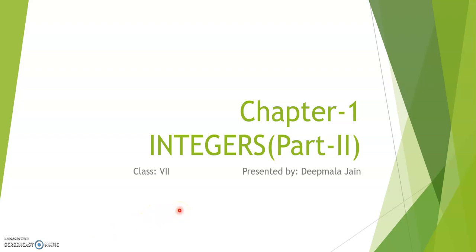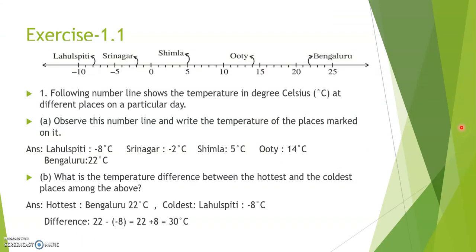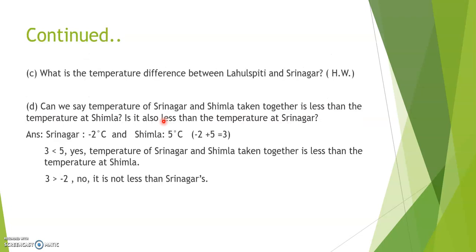Namaskar Bacchua. Welcome to Part 2 of Chapter 1, Integers, of Class 7. In this presentation we will discuss some of the questions of Exercise 1.1 of Chapter Integers. Question 1 was given in the previous presentation about temperature in degree Celsius at different places — we are going to skip this question. You can see the details in the previous presentation named Part 1.